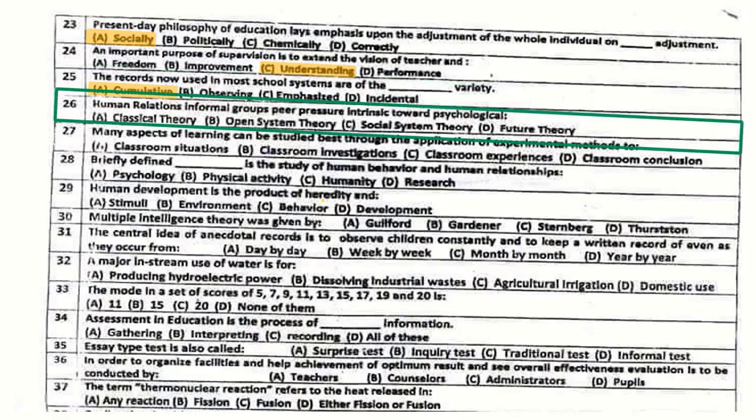Question number 26: Human relations, informal groups, peer pressure, intrinsic towards psychological — the correct answer is social system theory.